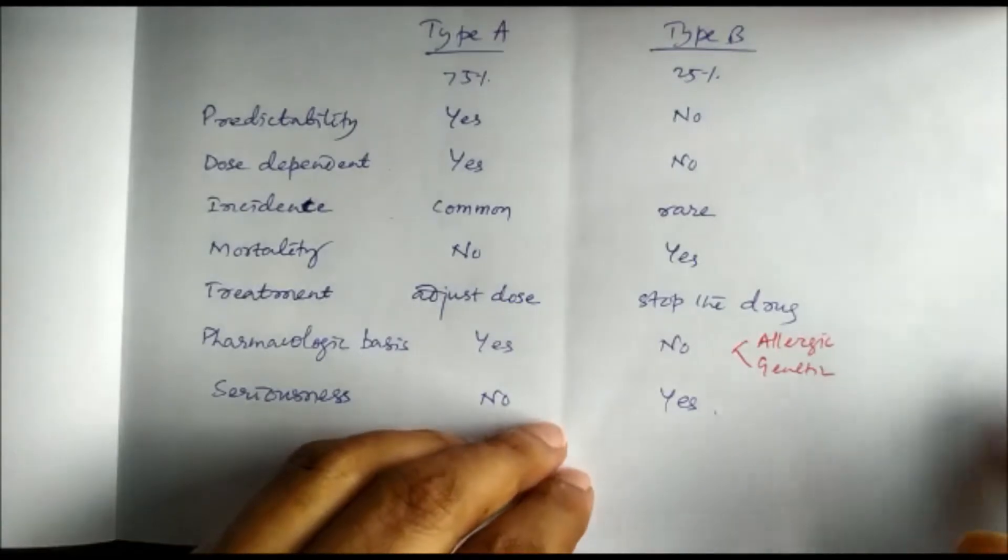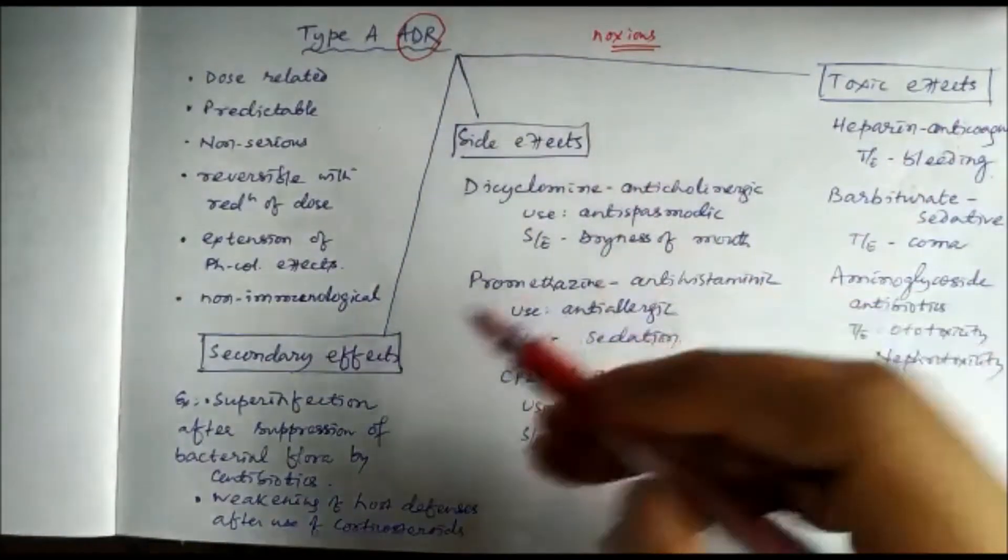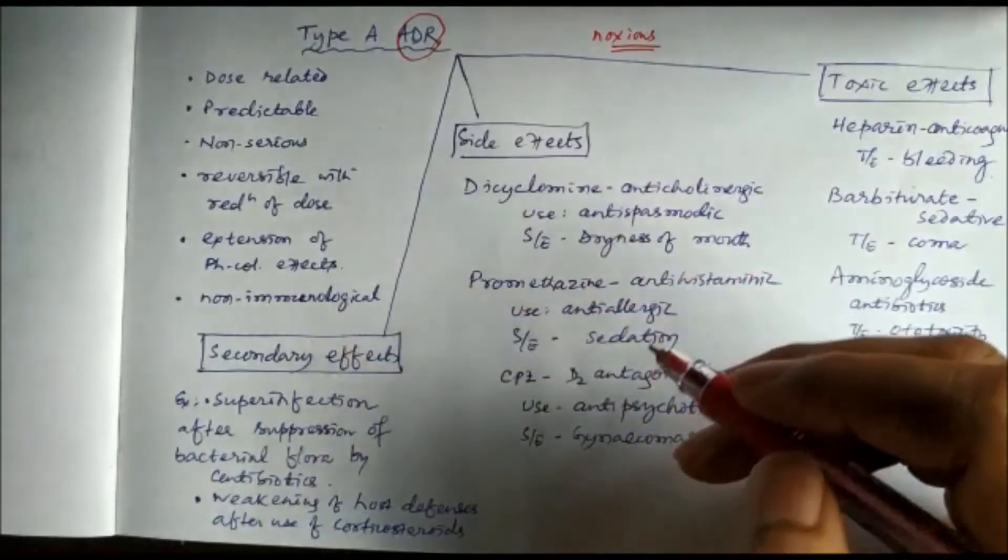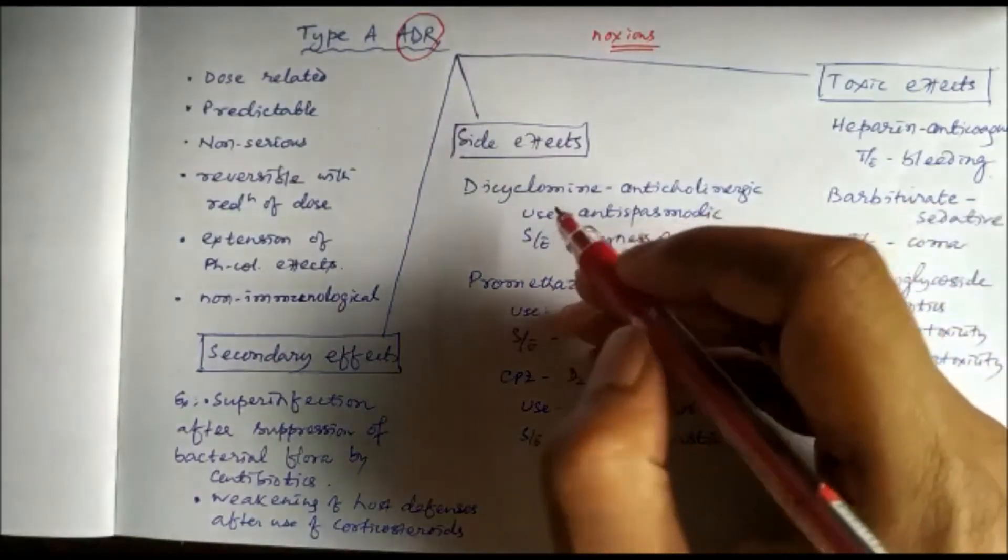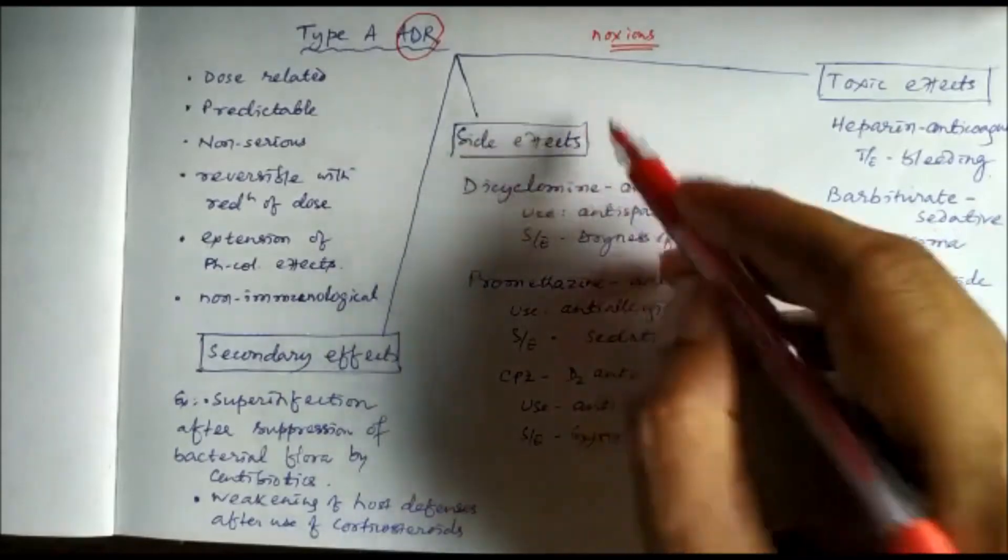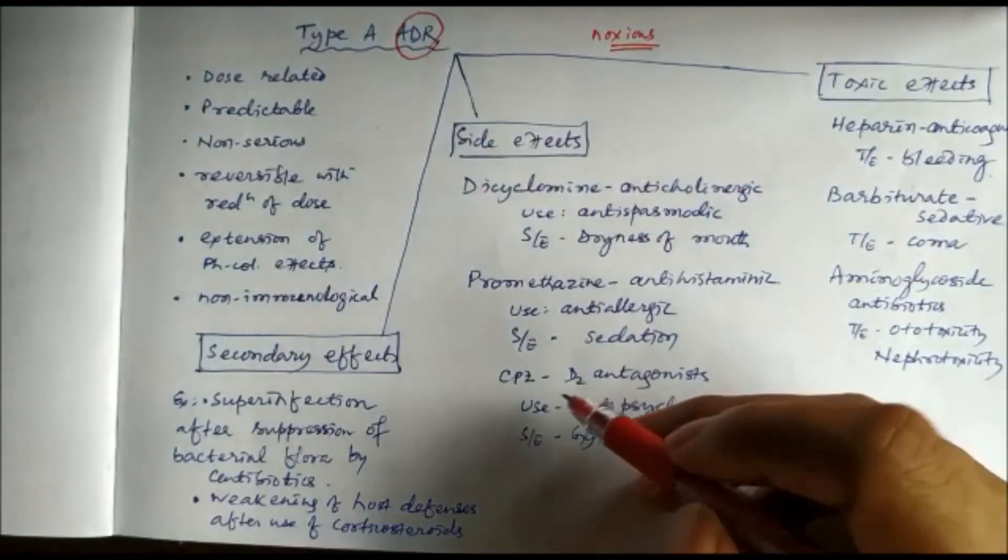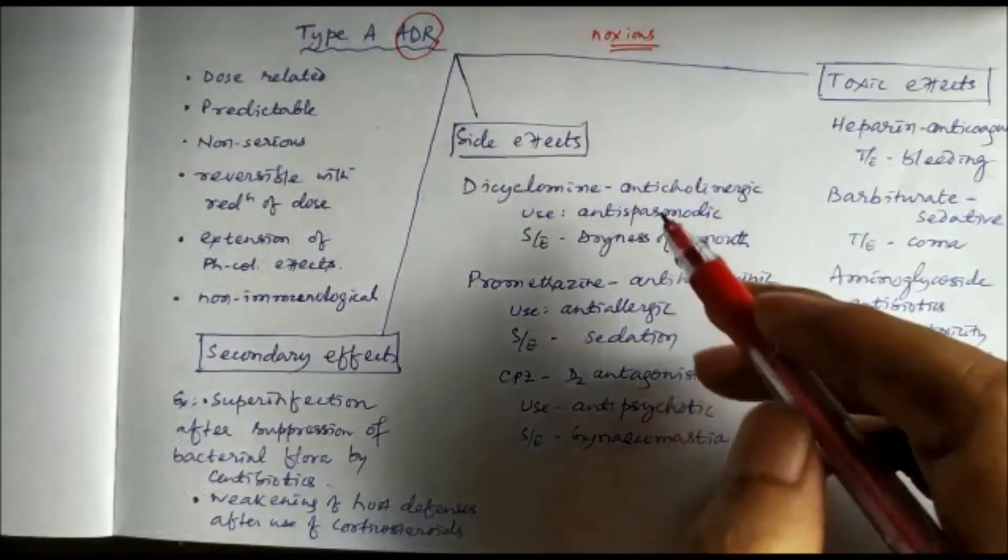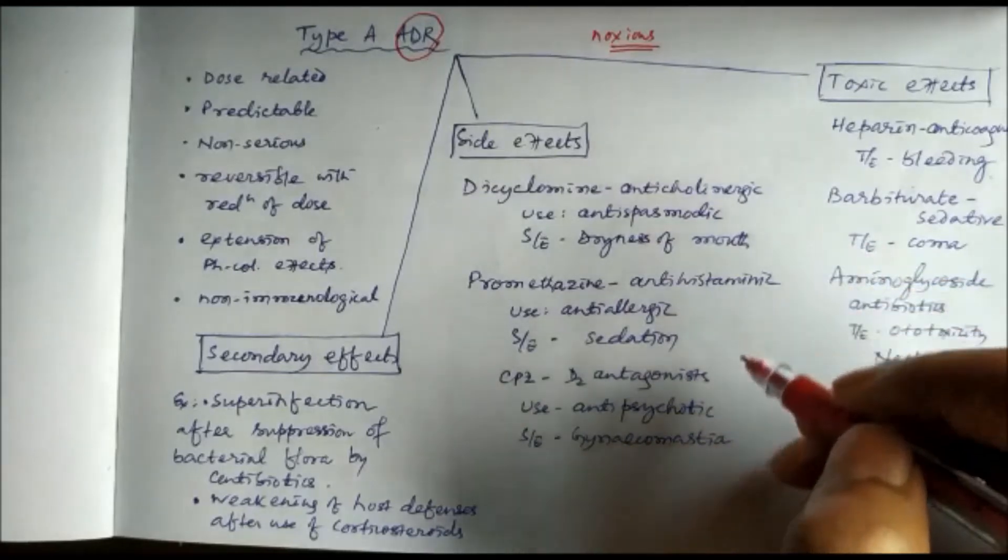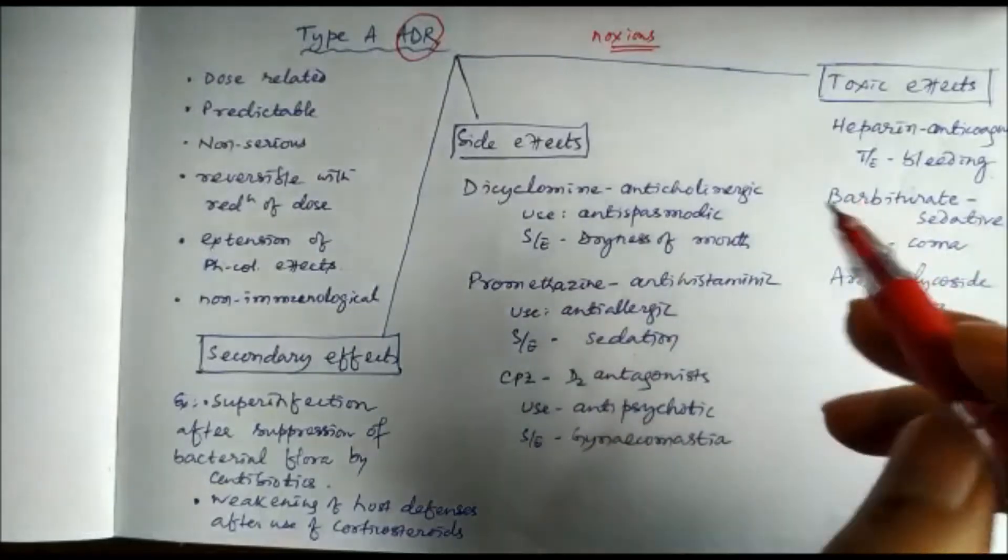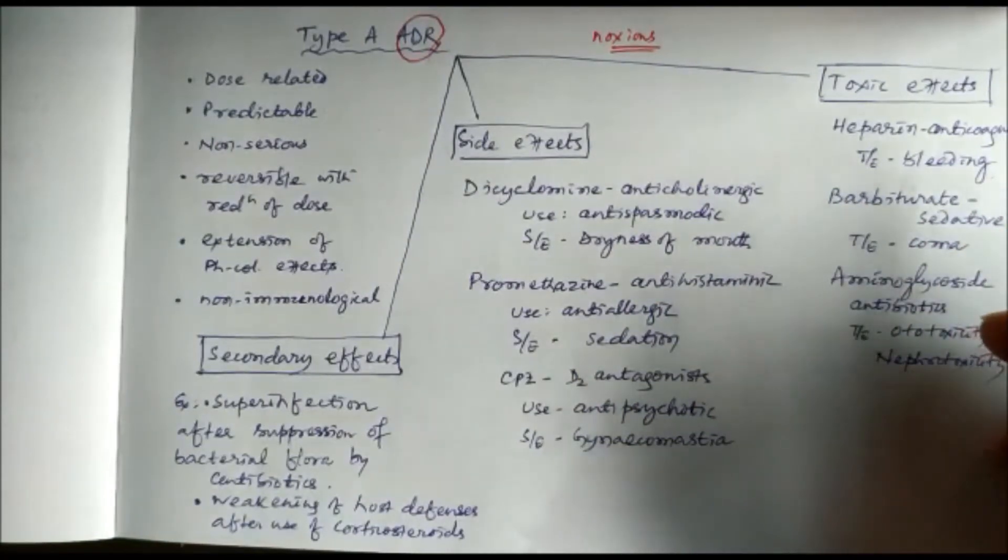Type A adverse drug reactions include the side effects, the toxic effects, and the secondary effects, because these are all pharmacological extensions of the pharmacological activities. The side effects are usually mild and not that serious, but when the side effects are harmful to the patient, when they are noxious, we can include them as Type A adverse drug reactions. For example, gynecomastia caused by chlorpromazine, the antipsychotic drug, sedation caused by promethazine—suppose the person is a driver, for him it will be definitely harmful—and dryness of mouth caused by dicyclomine. All these can be examples of Type A adverse drug reactions.